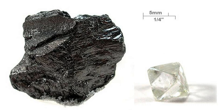Commercially viable natural deposits of graphite occur in many parts of the world, but the most important sources economically are in China, India, Brazil and North Korea. Graphite deposits are of metamorphic origin, found in association with quartz, mica and feldspars in schists, gneisses and metamorphosed sandstones and limestone as lenses or veins, sometimes of a metre or more in thickness. Deposits of graphite in Borrowdale, Cumberland, England were at first of sufficient size and purity that, until the 19th century, pencils were made simply by sawing blocks of natural graphite into strips before encasing them in wood. There are three types of natural graphite: amorphous, flake or crystalline flake, and vein or lump.